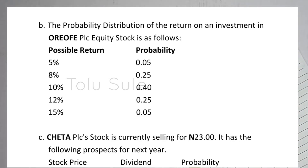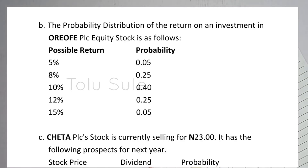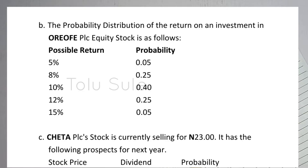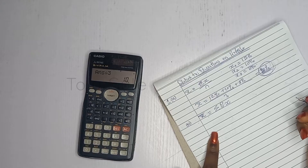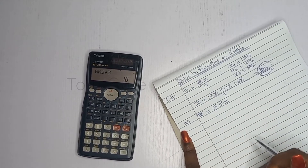In the second situation on screen, they give a probability distribution of returns on an investment in Oreo Fair PLC's equity stock. The possible returns are 5%, 8%, 10%, 12%, and 15%, each with a probability attached. You need to get the probable return — that is, probability times return — for each, then sum them. This is the expected return formula.